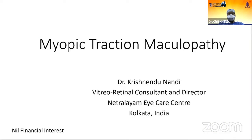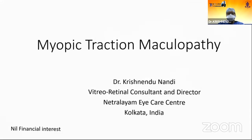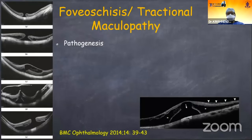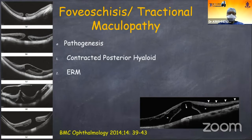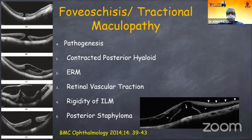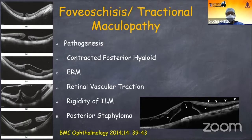Myopic traction maculopathy is a well-known term with the advent of high-dimension OCT machines. The pathogenesis of foveal schisis traction maculopathy involves anteroposterior traction by the posterior hyaloid and epiretinal membrane over the retina, and tangential traction by the retinal vasculature and small blood vessels, the rigid ILM.